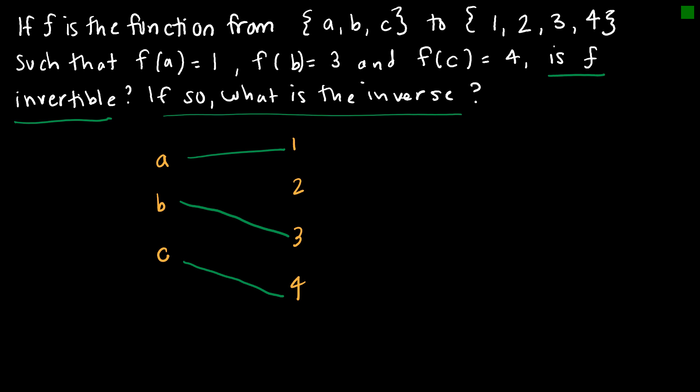So looking at this, I know in order for my function to be invertible, my function must be 1 to 1 and onto. And here is a problem right here, is that this is not onto. Therefore, it's not a bijection. And we need it to be a bijection, so it's not invertible.